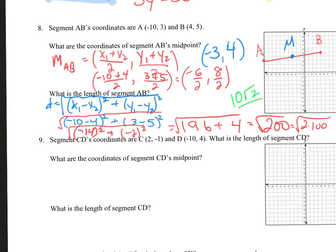Next one: we've got a new segment. I'm graphing the point 2 comma negative 1 and negative 10 comma 4. I'm going to connect these two to make segment CD. It's asking for the coordinates of the midpoint. How do we find the midpoint? We find the average of the x's and the average of the y's.